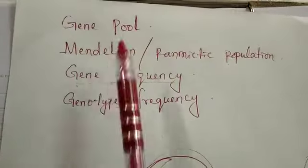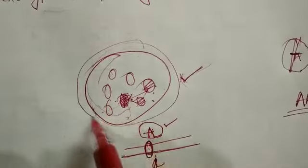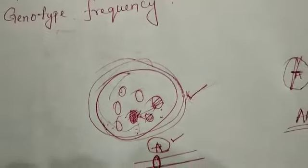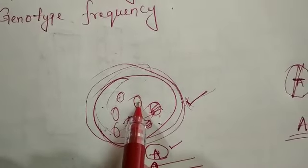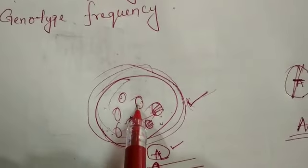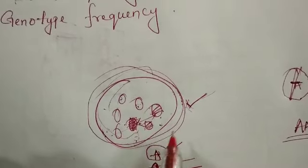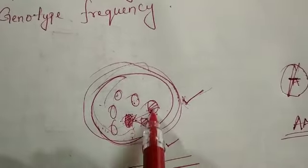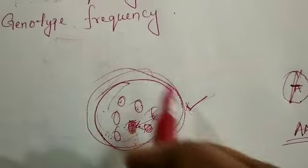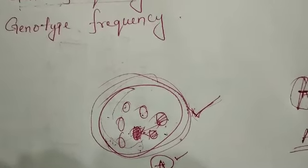First is gene pool. If we take a population, inside it we are going to have many individuals. And within each individual, a set of genes will be present, which is called the genome. If we take the sum total of all the genes present in this population, that is going to represent the gene pool.